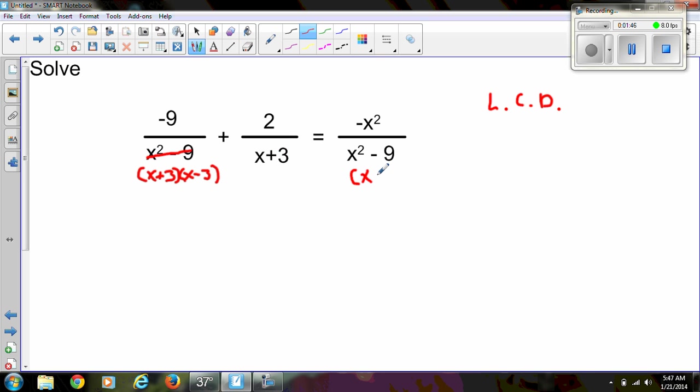Okay, so our LCD, as we look at each term, we're going to see that I have an x plus 3 and x minus 3. Same thing over here, this is just an x plus 3, so it looks like our LCD is going to be the x plus 3 times x minus 3.